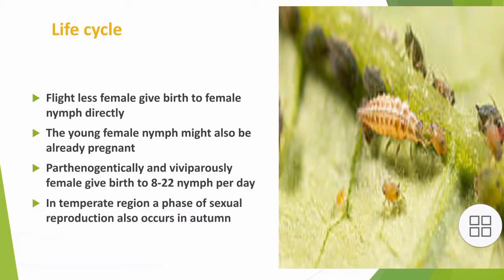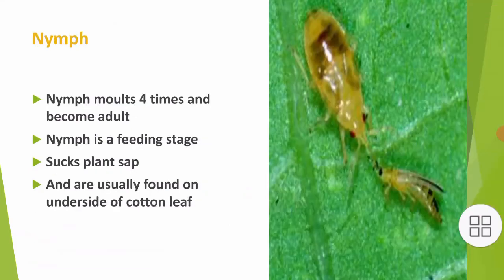Life cycle: Flightless females give birth to female nymphs directly, without any sexual phase. The young female nymphs may also already be pregnant. Parthenogenetically and viviparously, females give birth to 8 to 22 nymphs per day. In temperate regions, a phase of sexual reproduction also occurs in the autumn season, so they reproduce both sexually and asexually.